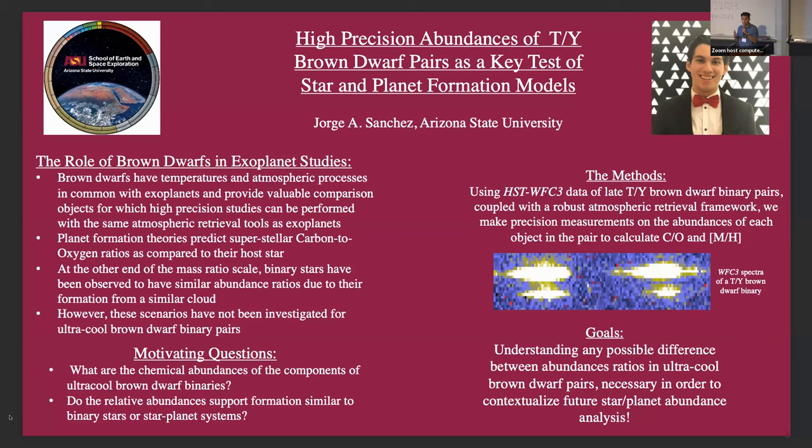In the stellar case, stellar binaries are predicted to have similar abundance ratios due to their similar formation environment. My work extends this to ultra-cool brown dwarfs — specifically late T dwarfs — and I want to study the abundance ratios between them in order to test formation theories: are they forming more similarly to planet-star systems or stellar binary systems? Come check out my poster to find out the answer. Thanks.